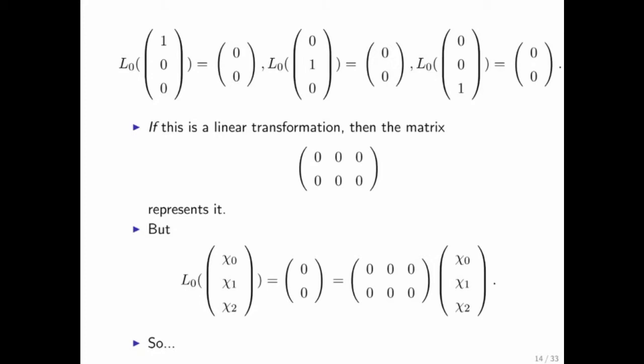Matrix vector multiplication is defined as this times that, plus this times that, plus this times that, which is clearly equal to zero. This times that, plus this times that, plus this times that, which also is clearly zero. So the fact is that it is equal.